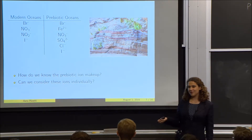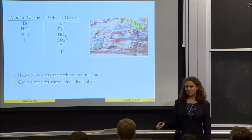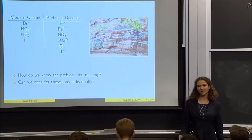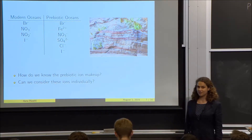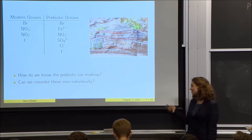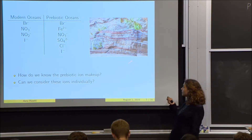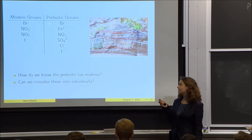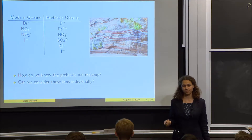You may ask: how do we know what's in the prebiotic ocean if no one was around to record it? We have geological evidence. For example, the only way for banded iron formations to form would be for there to have been a large amount of ferrous iron in the prebiotic ocean.